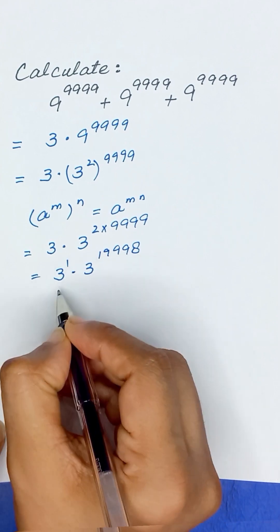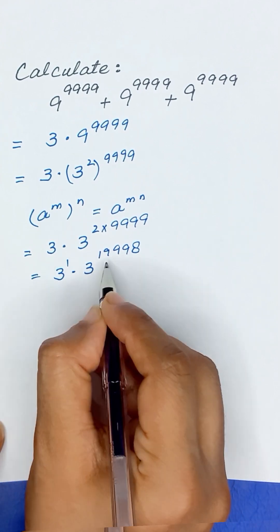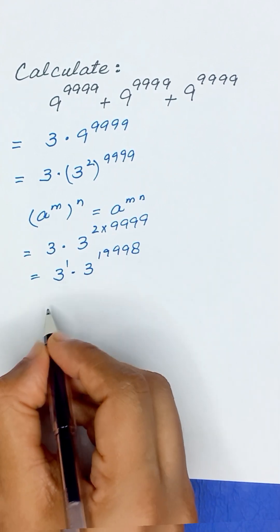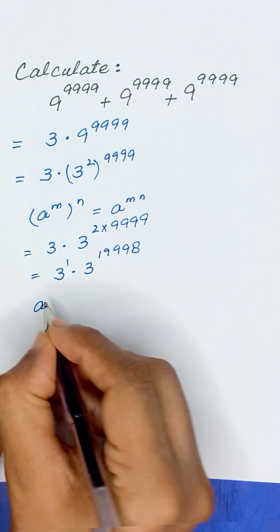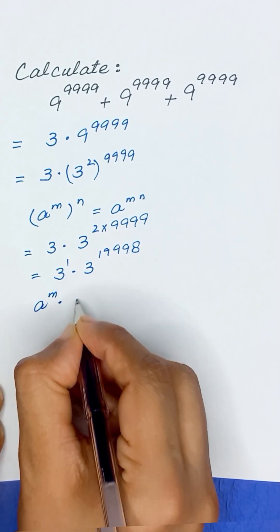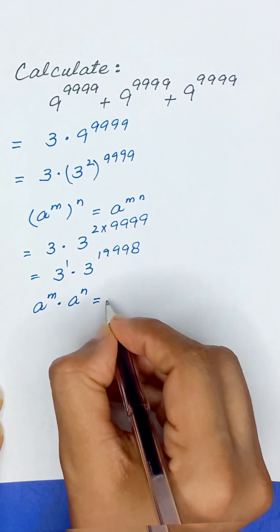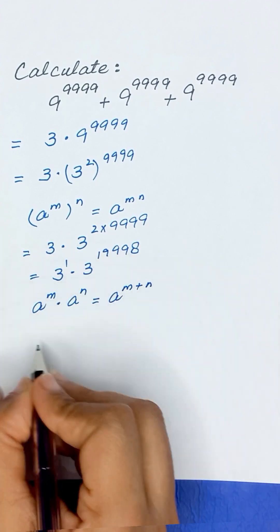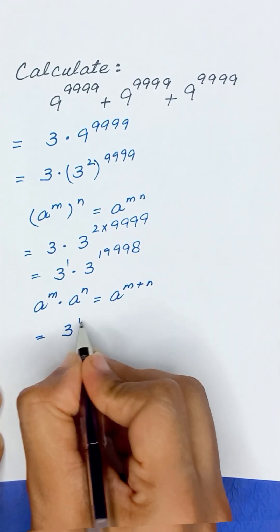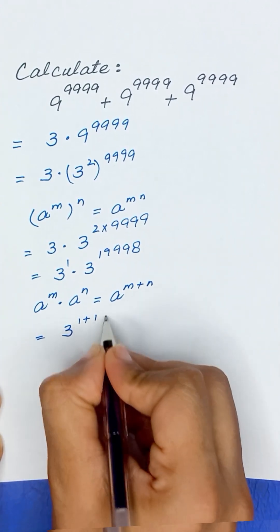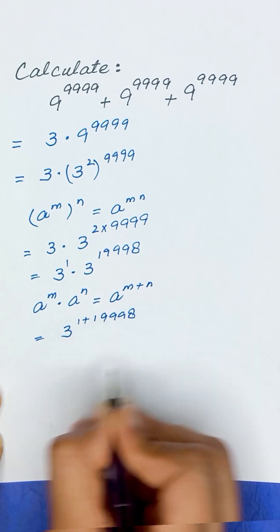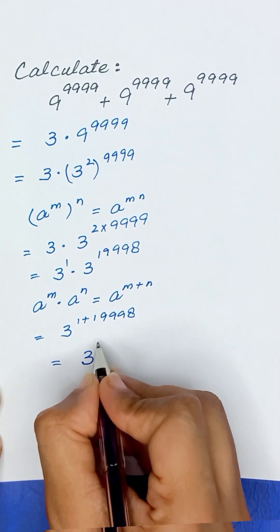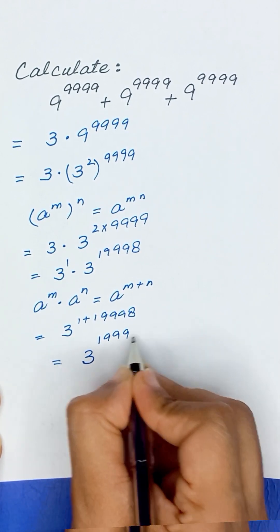So here we have 3 to the power 1 and 3 to the power 19,998. As we know, by the exponential rule, a to the power m times a to the power n is equal to a to the power m plus n. So it will become 3 to the power 1 plus 19,998, which is equal to 3 to the power 19,999.